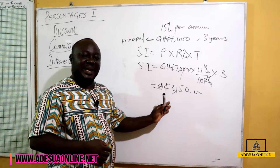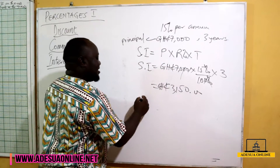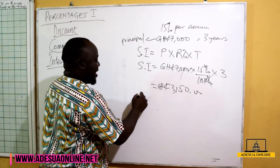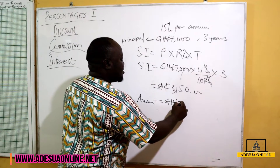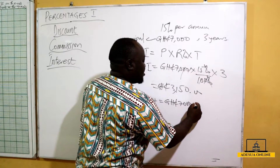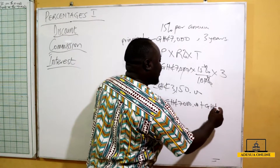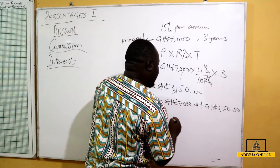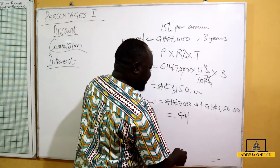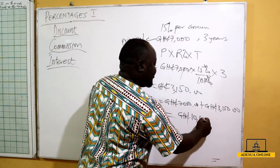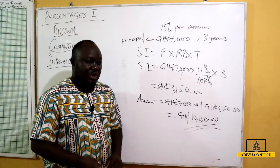If I want to take my money out of the bank, my total amount will be the 7,000 I deposited plus my simple interest of 3,150, which gives us 10,150 Ghana cedis. That is the amount I take home.